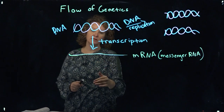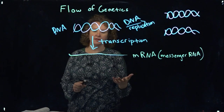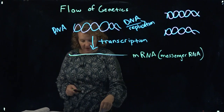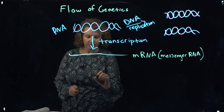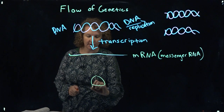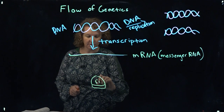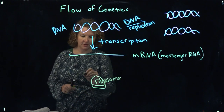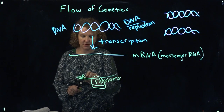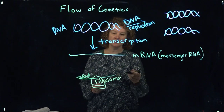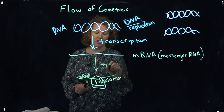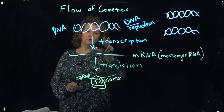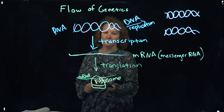In eukaryotes, the mRNA is going to leave the nucleus and go out into the cytoplasm. In prokaryotes, which are bacteria, everything is contained within the cytoplasm. The final step occurs at the ribosome, and this is true for both prokaryotic and eukaryotic cell types. The messenger RNA is read at the ribosome and translated — we're changing languages from a nucleotide language to an amino acid language.